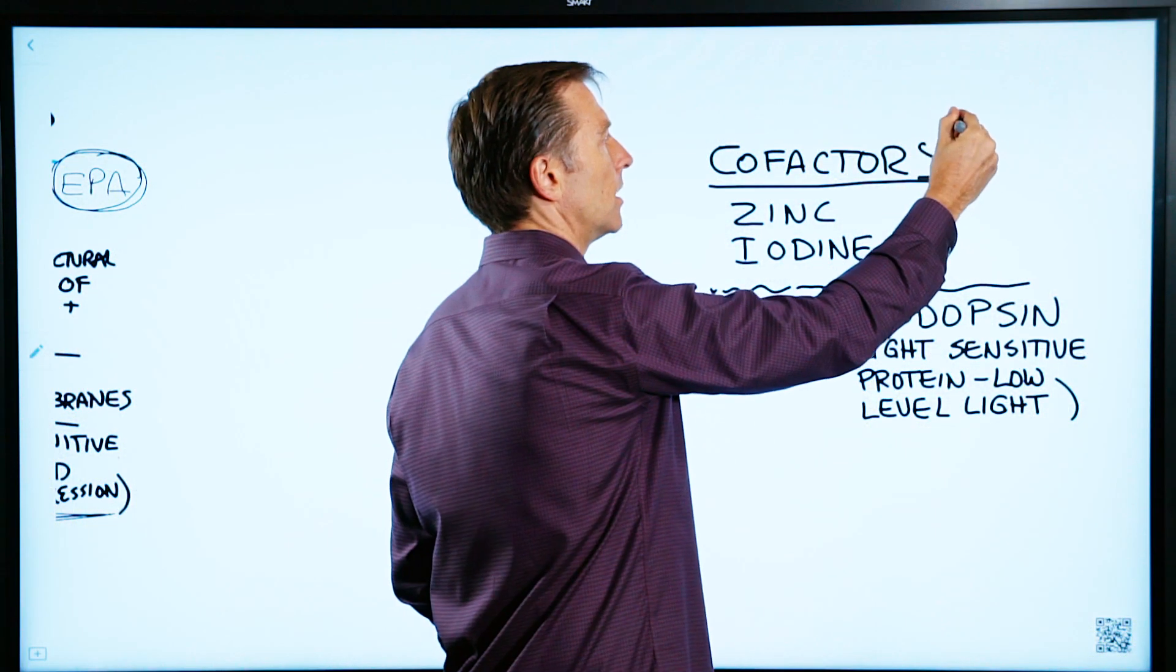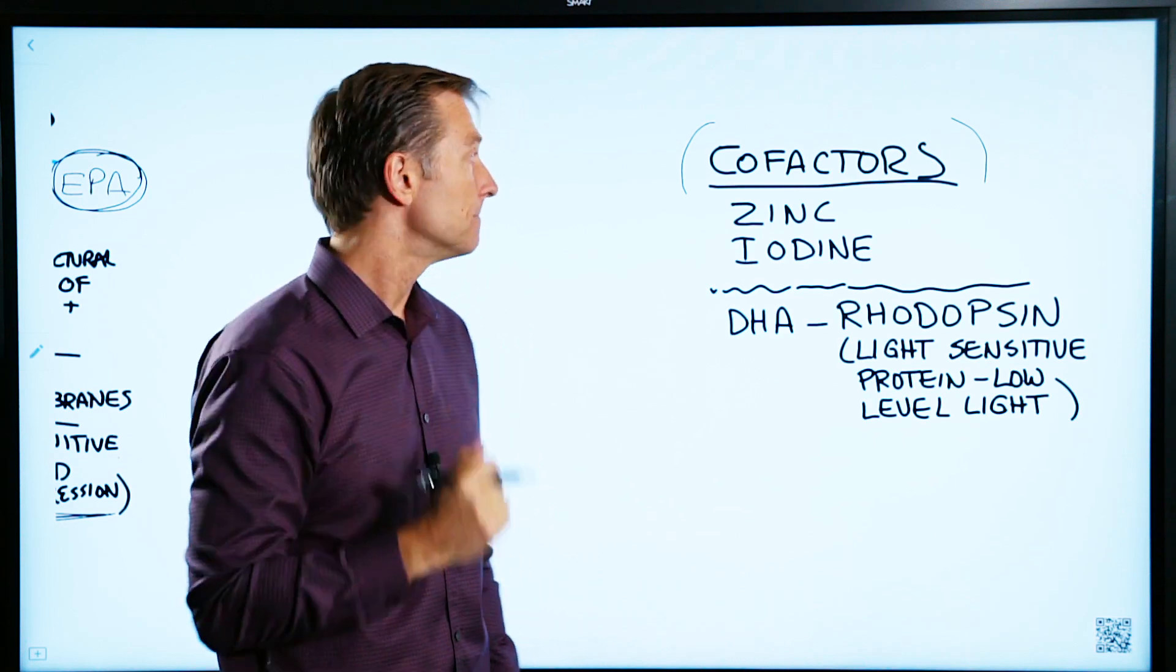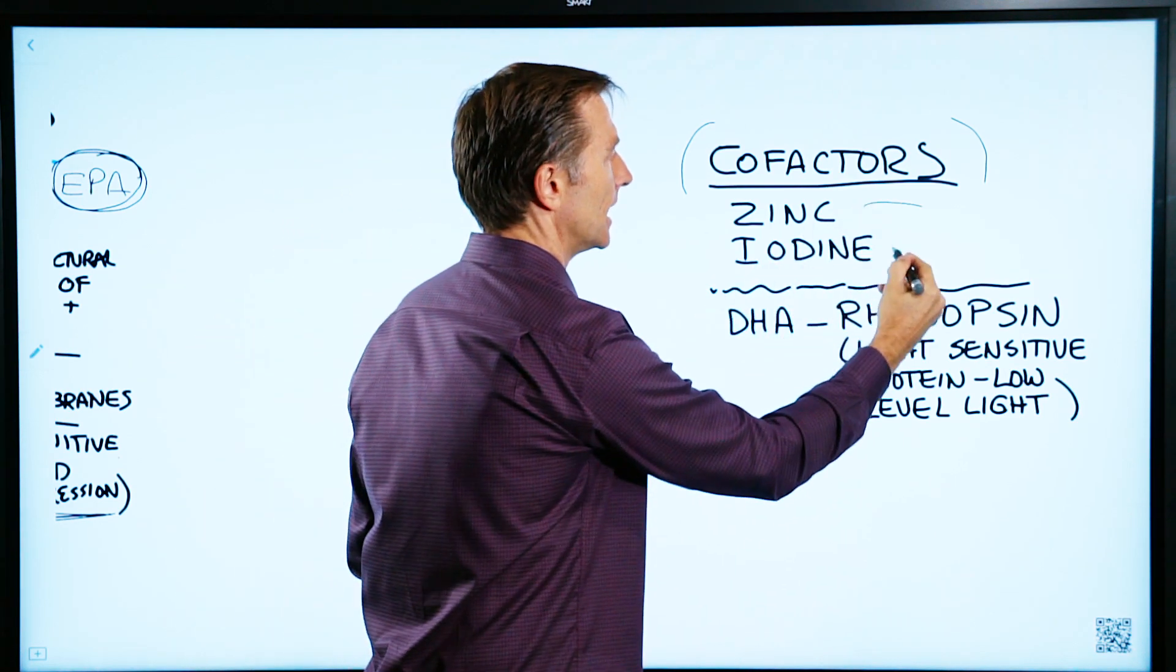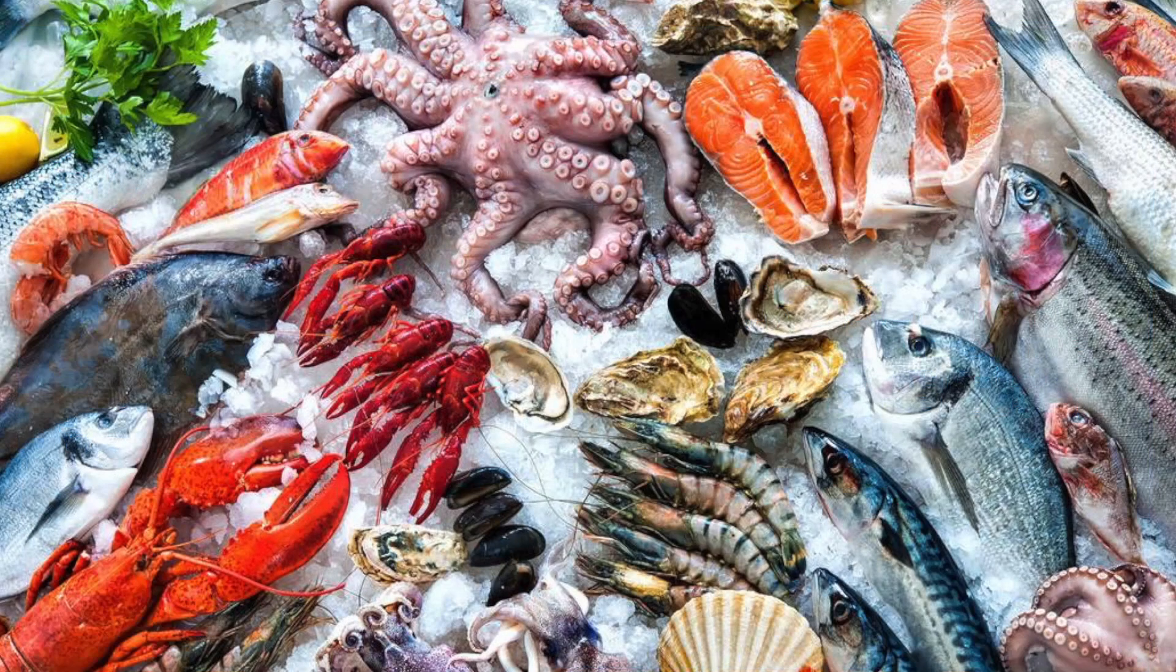There are cofactors that allow DHA to work in the brain and in the eye. Zinc and iodine. Well, guess what? It just so happens that you're going to get zinc and iodine when you consume seafood.